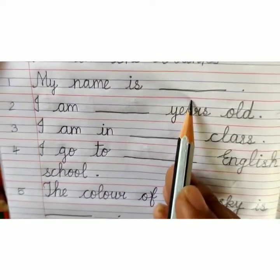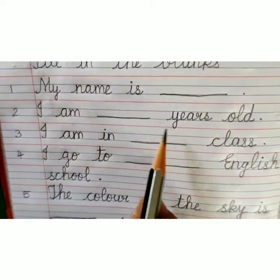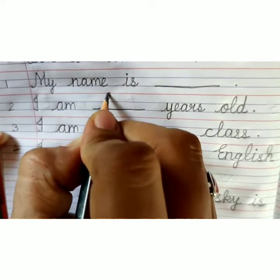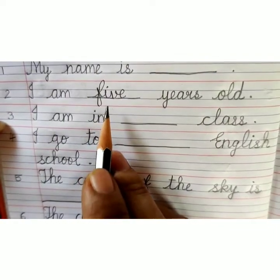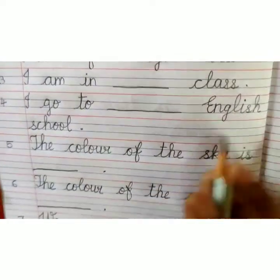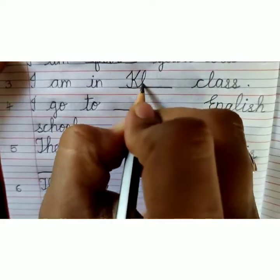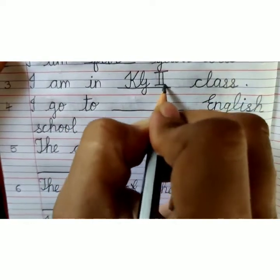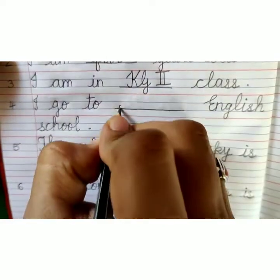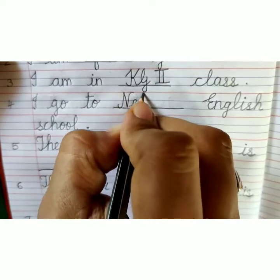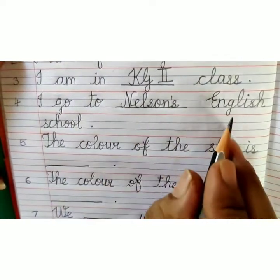Number 1: My name is ___. In this blank you have to write your own name. Number 2: I am ___ years old. Write F-I-V-E, five. Those who are 6 years old write S-I-X, six. Number 3: I am in KG2 class. Number 4: I go to Nelson's English School.